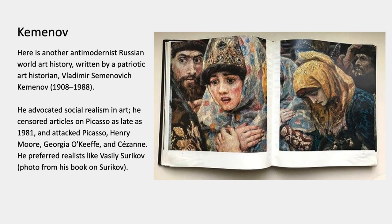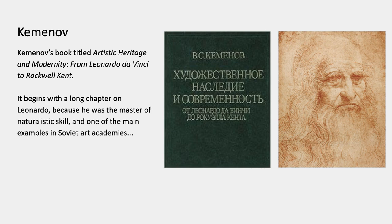He preferred artists like Vasily Surikov — this is a photo from Kemenov's book on Surikov. Kemenov's book is titled Artistic Heritage and Modernity: From Leonardo da Vinci to Rockwell Kent. It's an interesting example of a kind of world art history — in this case a heritage of modernism — that has a trajectory and a narrative which might seem a little implausible if you're not one of his intended readers.